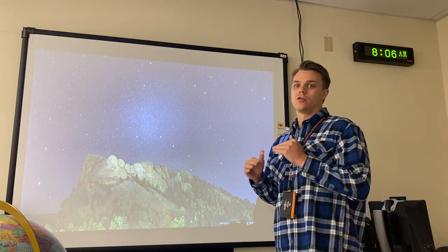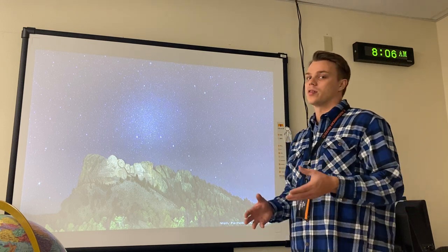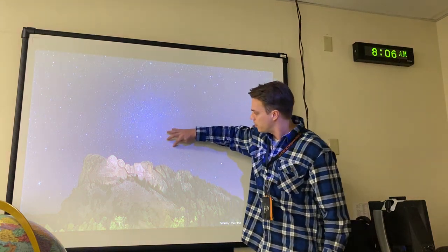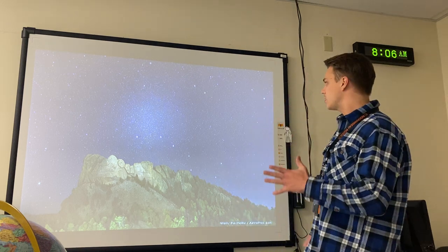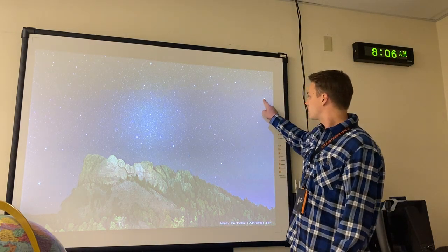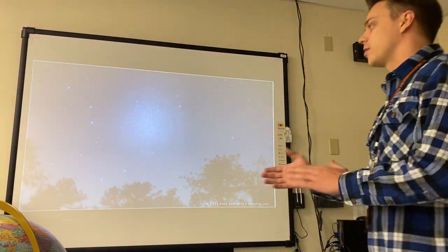Today we're going to learn how to find the North Star and how it relates to your location on Earth. Even in White Plains you can find the Big Dipper — it's usually in the northern part of the sky. It looks like three major stars in a band and then the ladle. The two end stars of the Big Dipper's spoon point almost exactly to the North Star.